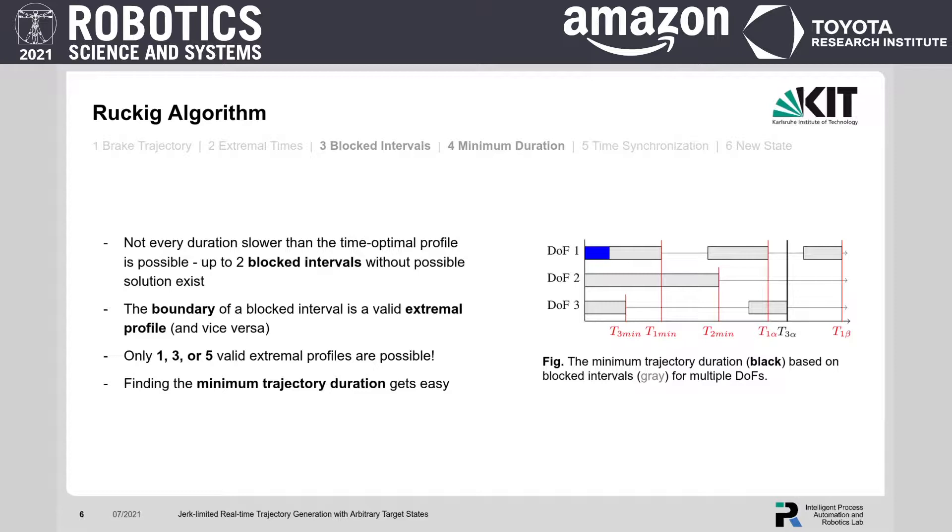Our main contribution is to show that the boundary of a blocked interval corresponds to an extremal profile, and vice versa. So only one, three or five valid extremal profiles are possible, and of course, this is what our implementation confirms.